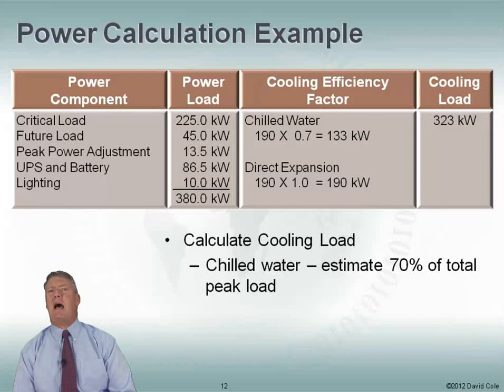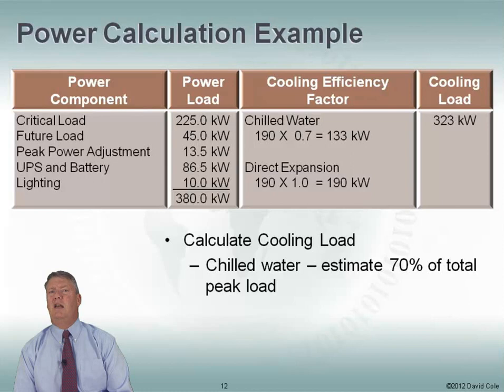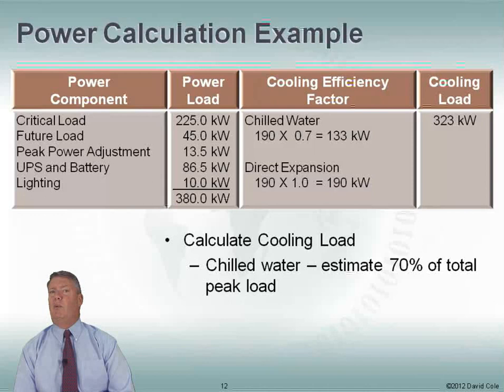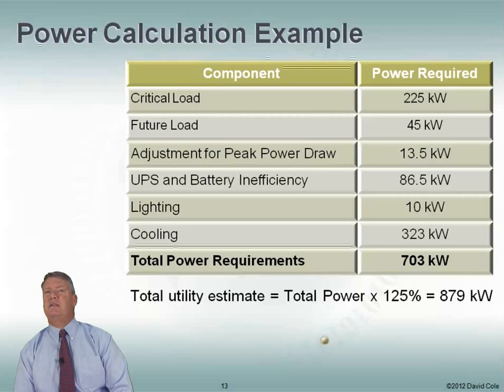Now I need to add in cooling. Half of my cooling will be done with chilled water — cooling 190 kilowatts. Chilled water is pretty efficient, drawing about 0.7 times that load, so 0.7 times 190 gives 133 kilowatts. Direct expansion is not quite as efficient — to cool 190 kilowatts it takes another 190 kilowatts. Adding those together gives a cooling load of 323 kilowatts. Adding that to our 380 kilowatts, we're now at 703 kilowatts — these are conservative numbers, but I don't want to get caught without space, power, and cooling.